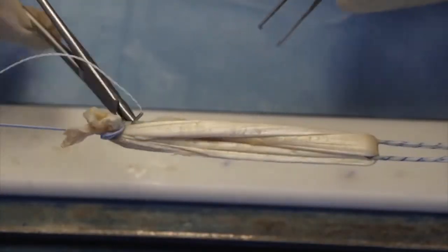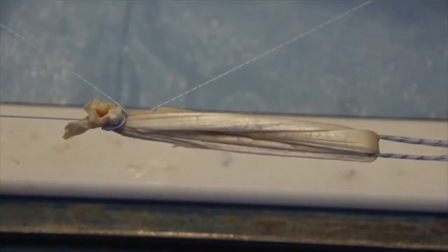The graft is whip stitched with a continuous non-absorbable suture from distal to proximal, and then from proximal to distal to reinforce the distal site of the graft.